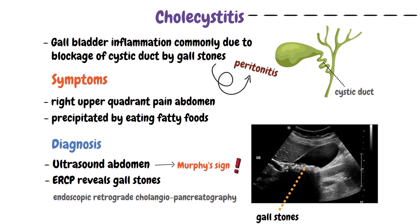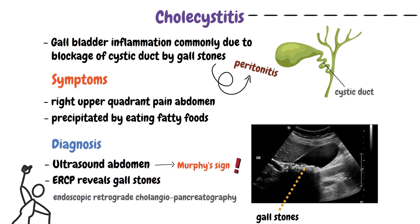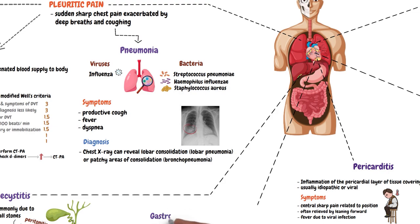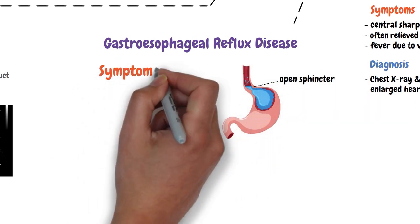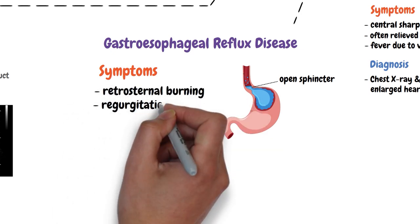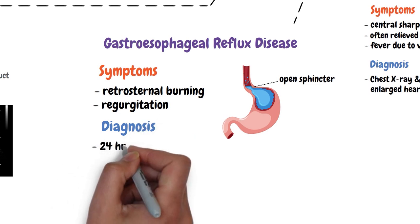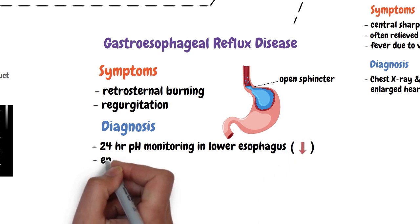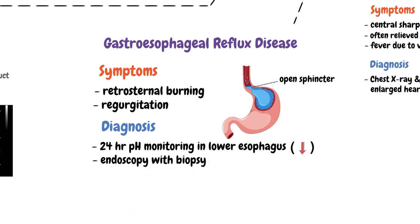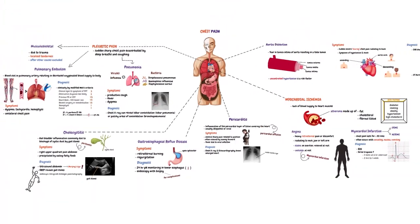The ERCP procedure involves injecting a dye into the biliary tract through its opening in the duodenum, which allows visualization of the biliary tract and identification of any obstructions. Lastly, chest pain is also caused by gastroesophageal reflux disease, in which acidic stomach contents reflux into the lower esophagus due to a weakened lower esophageal sphincter. Symptoms include retrosternal burning and regurgitation of food. To diagnose, 24-hour pH monitoring is done, as the pH of the lower esophagus is expected to be lower than normal. An endoscopy with biopsy may also be done to check for complications such as ulcers. With that, we've covered all the causes of chest pain and how they can present in a patient, and how to diagnose them.